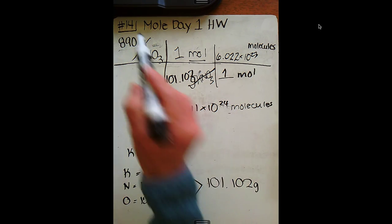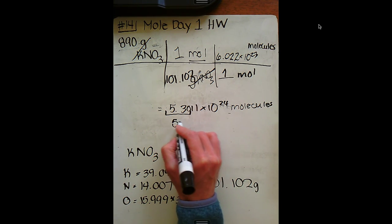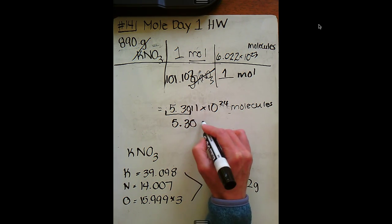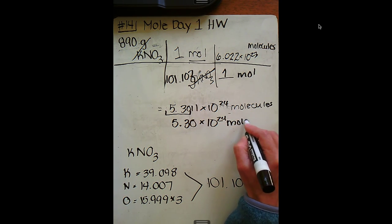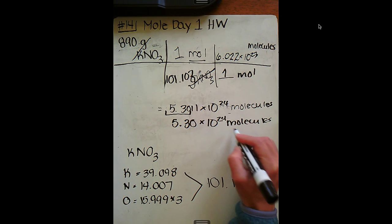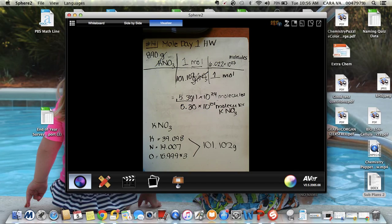We look back at the original—we have three sig figs, so we also want three sig figs here, which means our answer would be 5.30 times 10 to the 24th molecules of potassium nitrate, or KNO3. Okay, let me know if you have any further questions on that one, guys.